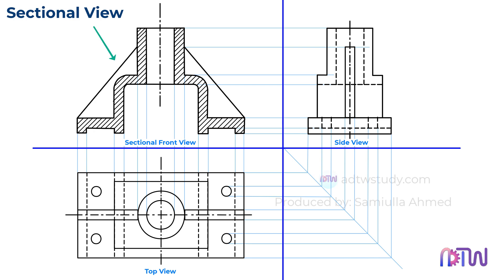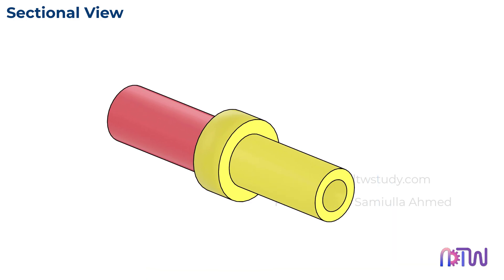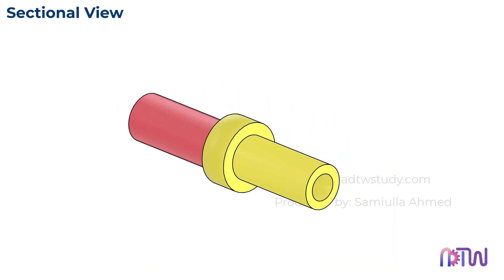A sectional view in engineering drawing is a technique used to reveal the internal details of an object by cutting through it. Imagine you have a toy or a solid object, and you slice it in half.